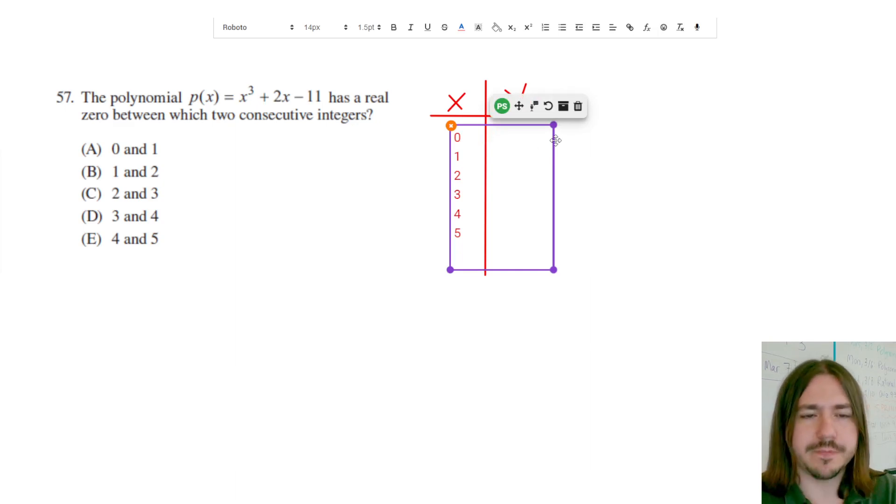So I've got my calculator ready. I'm going to start by plugging in 0. So I've got 0 cubed plus 2 times 0 minus 11. I'm going to type that in here, and I get negative 11. So my function is below the x-axis here.